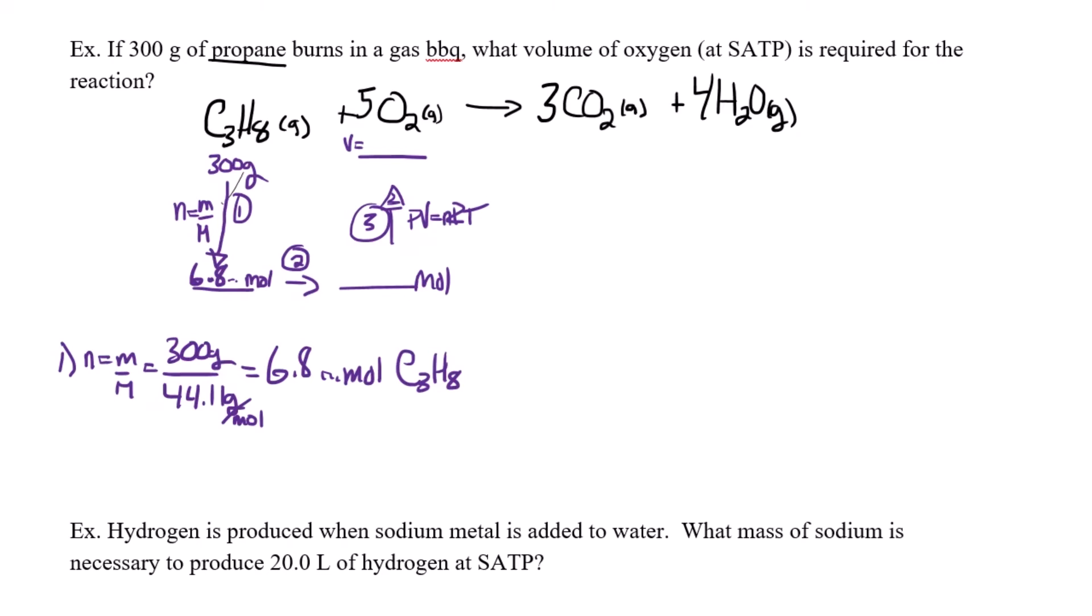Now we need to turn those moles of propane, figure out what the amount of moles of oxygen will be that will be burned at the same time. So I'll use the mole ratio for that. 6.8 moles of propane. Now I need my propane to cancel, so it's going to be on the bottom, and it has a coefficient here of one. So I've got one mole of propane that's consumed every time five moles of oxygen are consumed also. So here then propane and the propane cancel. And 6.8 times five divided by one gives me 34 moles of oxygen.